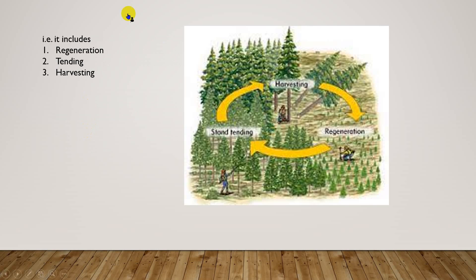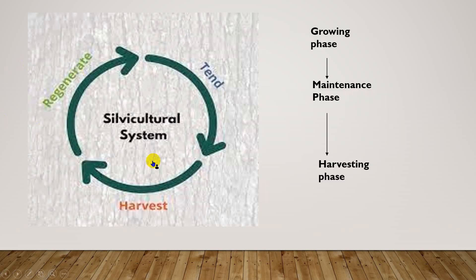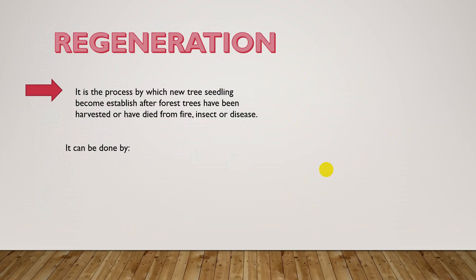The silvicultural system includes three phases: regeneration, tending, and harvesting. These phases cover the full cycle — the regeneration and growing phase, the tending and maintenance phase, and the harvesting phase.